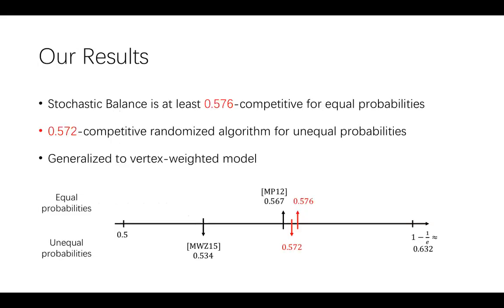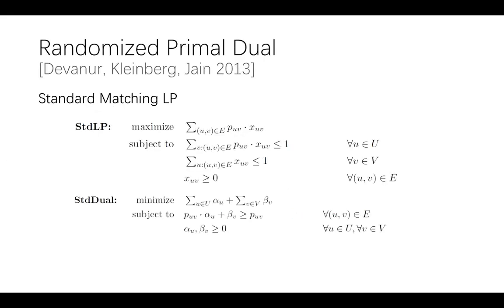Here come our results. For the equal probability case, we proved that stochastic balance is at least 0.576-competitive. For the unequal probability case, we propose a new randomized algorithm that is 0.572-competitive. Finally, our results can be generalized to the vertex weighting model. Our analysis is based on the randomized primal-dual framework, first introduced by Devanur, Kleinberg, and Jain in 2013.